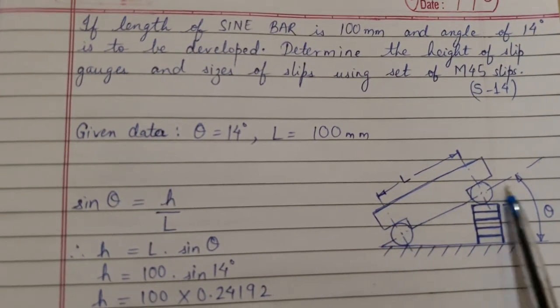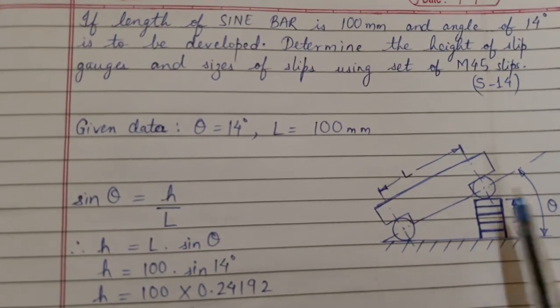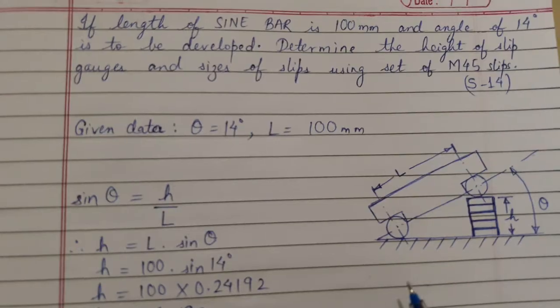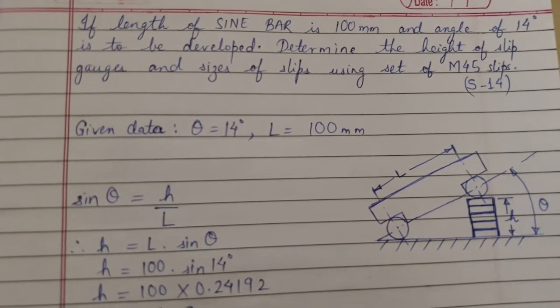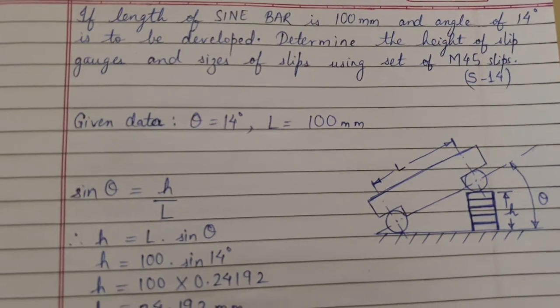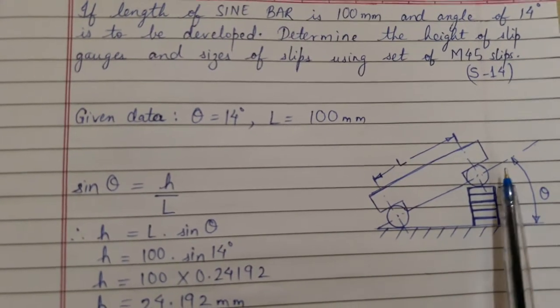100 mm and an angle of 14 degrees is to be developed, determine the height of slip gauges and the size of slips using M45 slip set. The information provided is the angle which needs to be developed and the length between the rollers.